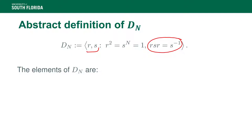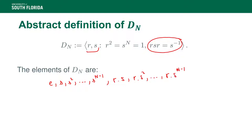The elements of D sub n are the identity, and then s, s squared, until s to the n minus 1. If we continue to raise to more powers of s, we loop back. And then r times s, r times s squared, and so on, until r times s to the n minus 1. So these are 2n elements, and these are the only elements we have in D sub n.